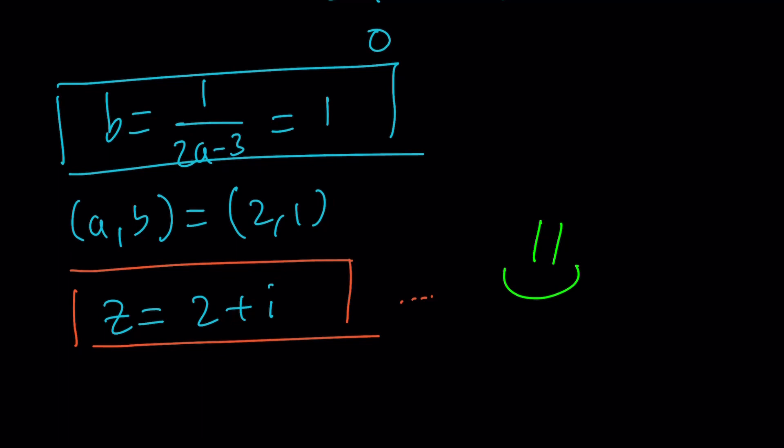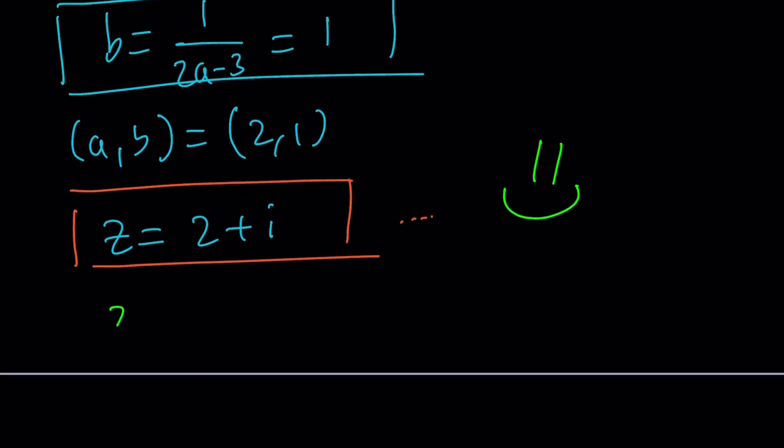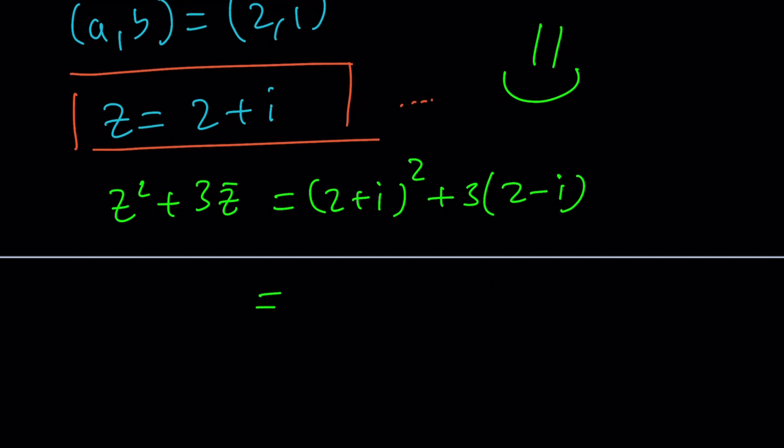By the way, I forgot to say, but you can go ahead and if you want, you don't have to, but if you want, you can test this out. Replace Z with 2 plus I and Z bar with 2 minus I and check this out. Let's do it. 4 plus 4 I minus 1 because I squared plus 6 minus 3 I. And then from here, we get 4 plus 6, 10 minus 1 is 9 plus I. And yes, it does satisfy the equation.